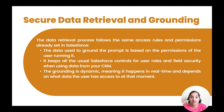It keeps all the usual Salesforce controls for user roles and field-level security when using data from your CRM. This data retrieval happens very securely according to the roles and field-level security access you have based on your role. The grounding is dynamic, meaning it happens in real time and depends on what data the user has access to at the moment — based on that, only that data would be fetched from your object fields and related lists.